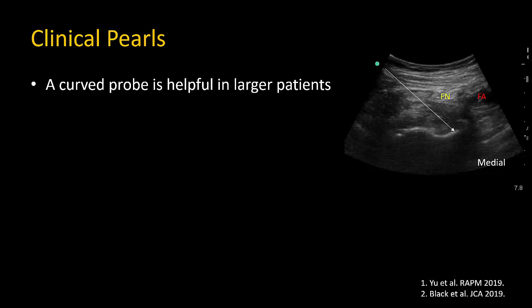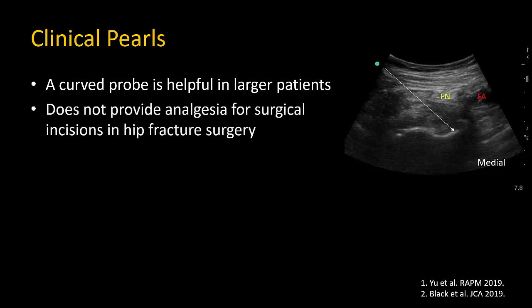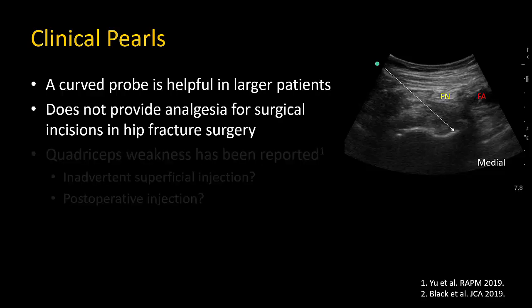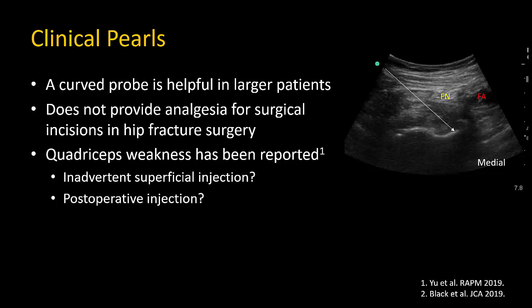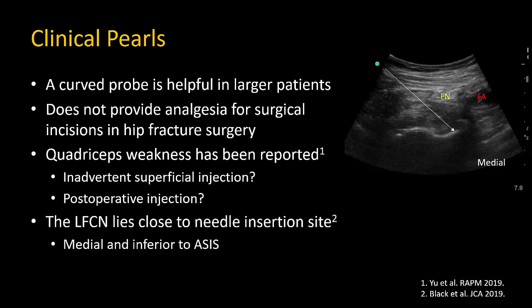Here are some clinical pearls to finish. A curved probe is helpful in larger patients. Note that the PENG block does not provide coverage or analgesia for surgical incisions through skin or muscle in hip fracture surgery, and thus other blocks should be considered for the postoperative period. In general, the block avoids femoral nerve blockade and quadriceps weakness, but there is one report to date in the literature, so vigilance should be maintained. Be aware of the lateral femoral cutaneous nerve, which is medial and inferior to the ASIS and could potentially lie close to the needle insertion site if this is made too lateral to the probe.